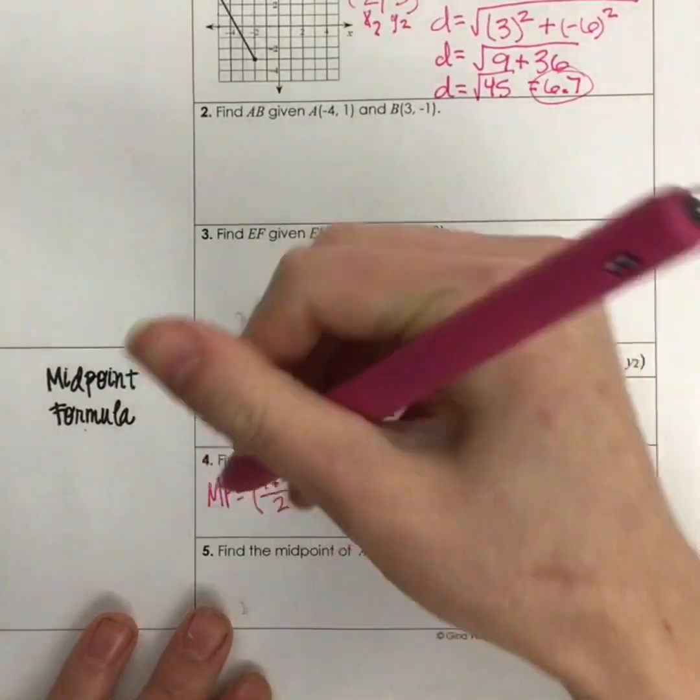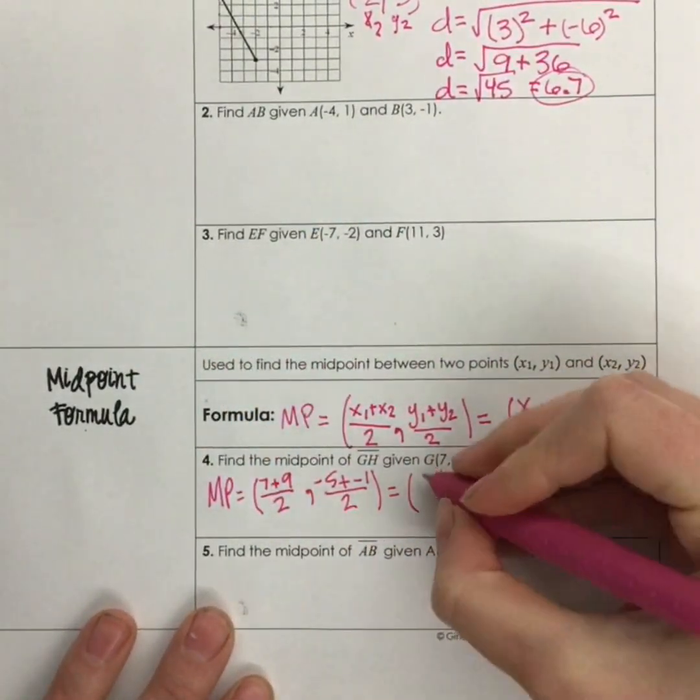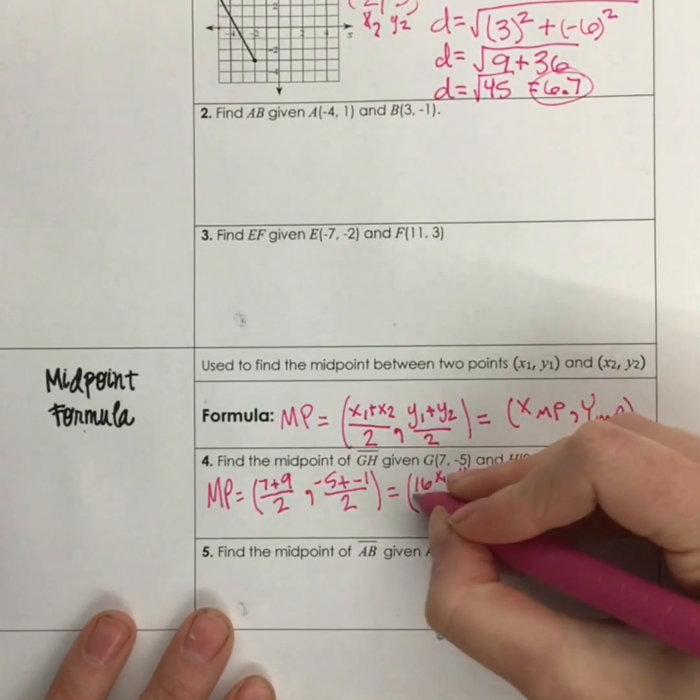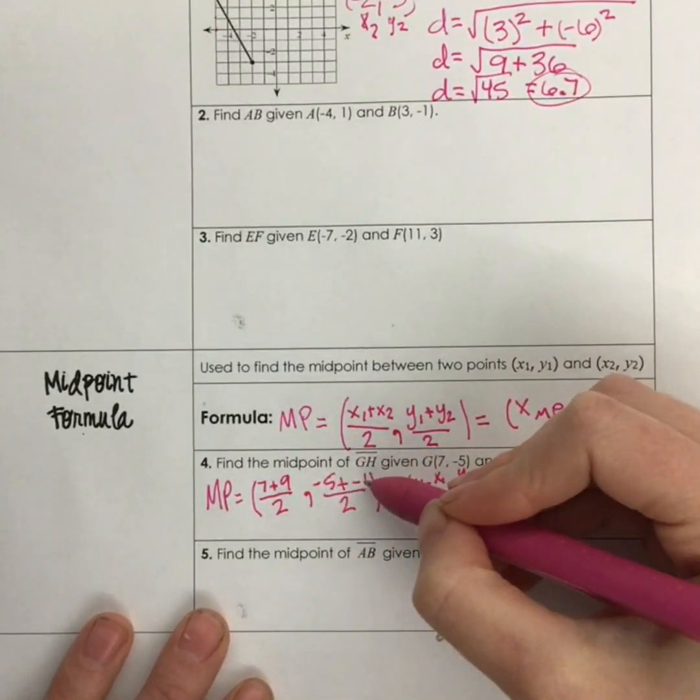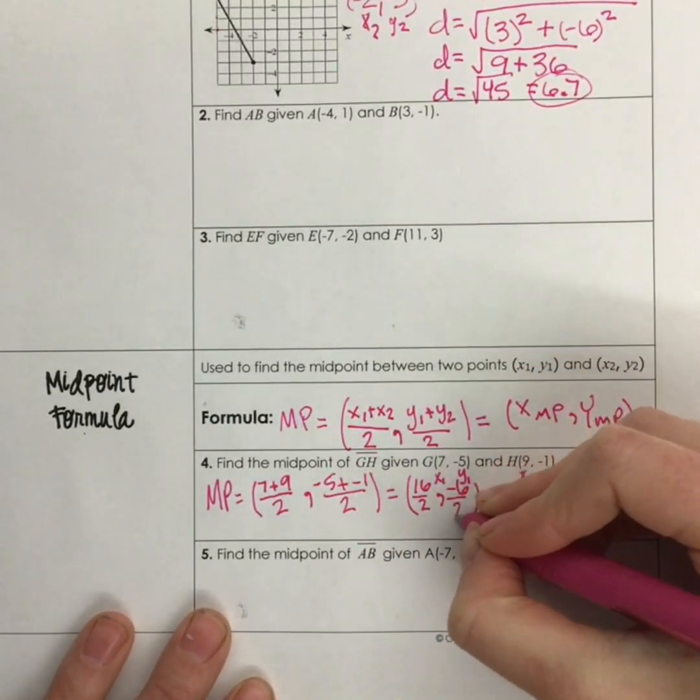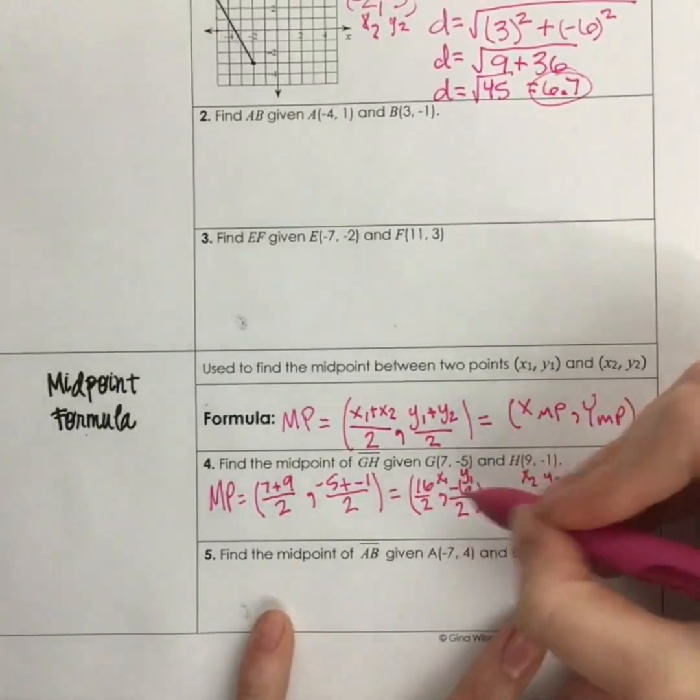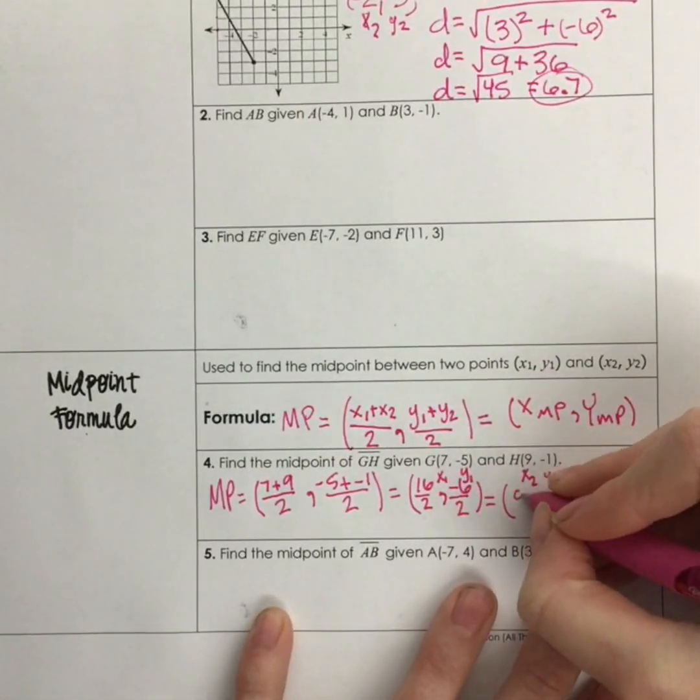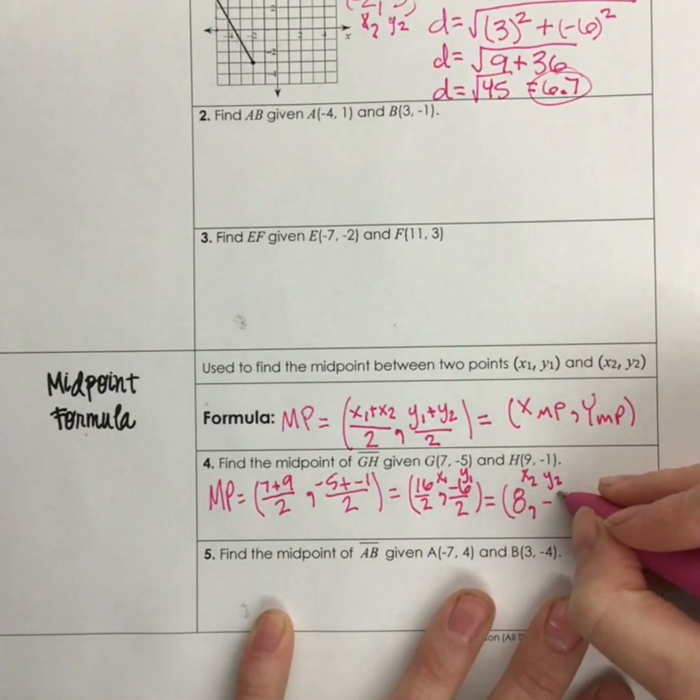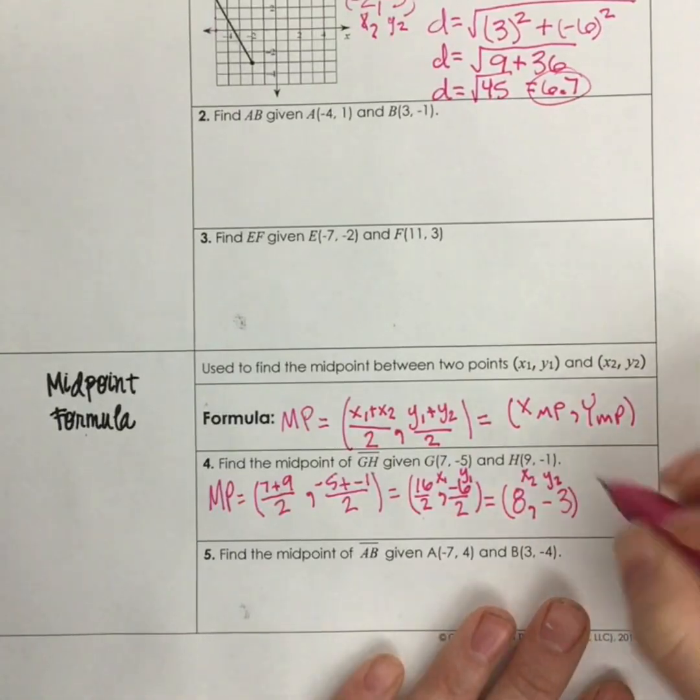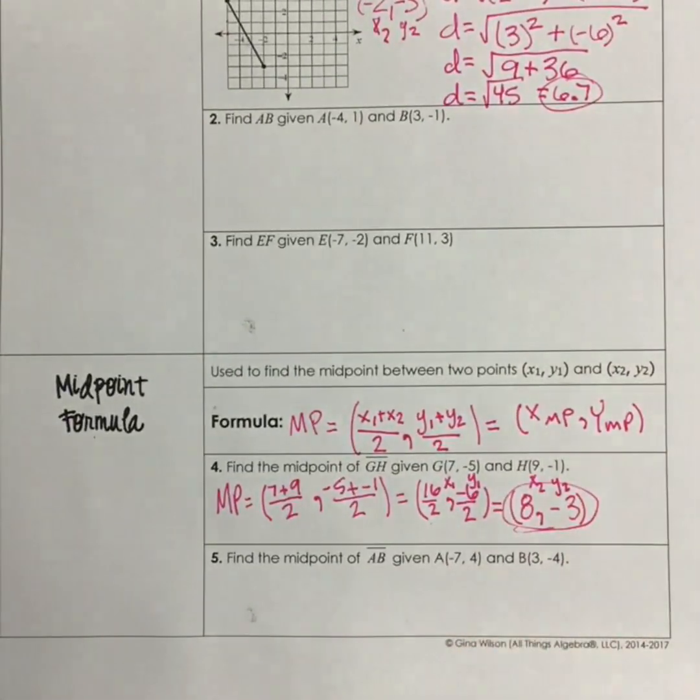Adding these tops together, we get 7 plus 9, which would give me 16, divided by 2, comma, negative 5 plus a negative 1 will give me a negative 6, divided by 2. And now I can divide both of these by 2. So I get 16 divided by 2 is 8 for my x-coordinate, and negative 6 divided by 2 would give me negative 3 for my y-coordinate. So that would be my midpoint between 7, negative 5, and 9, negative 1. So let's move on to talking about equations of circles.